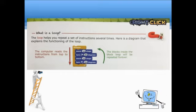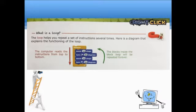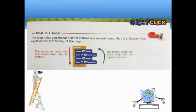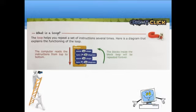In here, we have the blocks move 10 steps, turn 90 degrees, move 10 steps, and turn 90 degrees under the block forever. So, the blocks inside the block loop will be repeated forever. And take note, since it's under the block forever, the blocks will repeat several times and it will never stop unless you use another block to stop it.